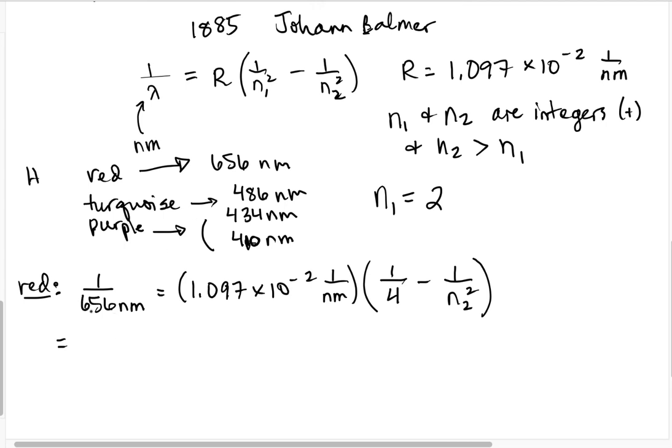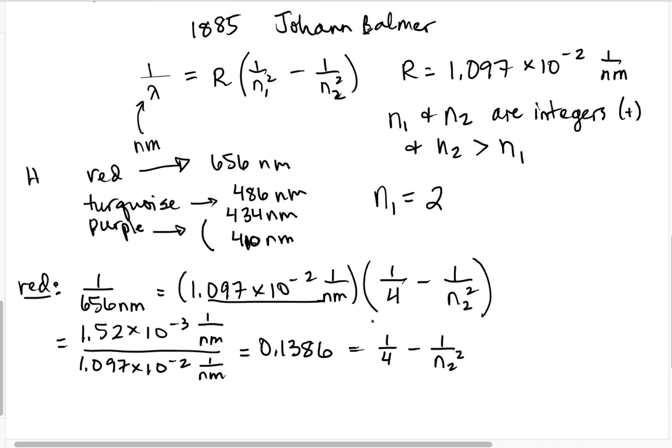So if we simplify this a little bit. If we take 1 over 656, we get 1.52 times 10 to the minus 3, the units are 1 over nanometers. So we can divide out this number, 1.097 times 10 to the minus 2, 1 over nanometers. And the units will cancel out, and we'll get 0.1386. So that's over on the left hand side now, because we divided out this number. And on the right hand side, we still have 1 over 4 minus 1 over n2 squared. So 1 over 4 is just 0.25. So we can subtract that from both sides.